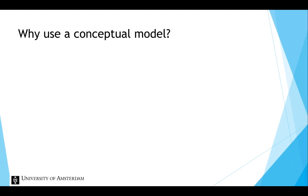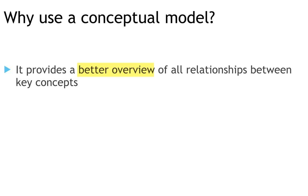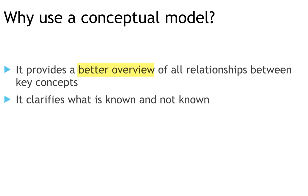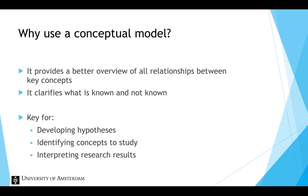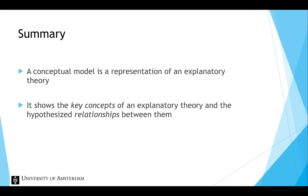Why do we make a conceptual model? The strength of a conceptual model is its simplicity — it provides a better overview of all relationships between key concepts. A conceptual model is often made in the early stage of a study to clarify what is known and not known. It is key for developing research hypotheses, identifying key concepts to study, and interpreting research results. To summarize, a conceptual model is a representation of an explanatory theory showing the key concepts and the hypothesized relationships between them.